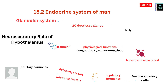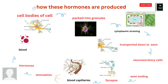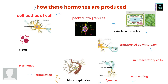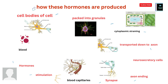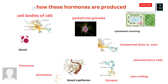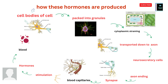The hormones are produced in the cell body of neurosecretory cells in the form of granules. These granules are then packed and transported to the axon via cytoplasmic streaming.